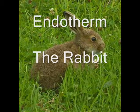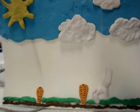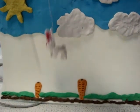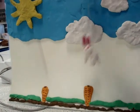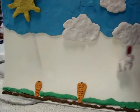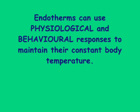The rabbit is an example of an endotherm. Endotherms use internal sources of heat to keep their body at the right temperature. Endotherms can use physiological and behavioural responses to maintain their constant body temperature.